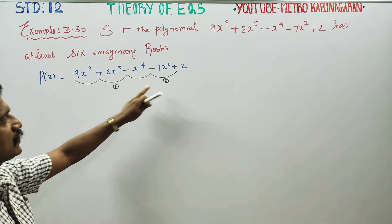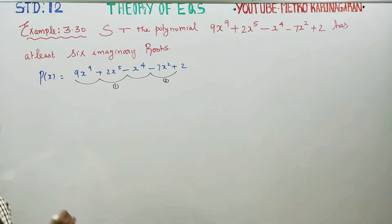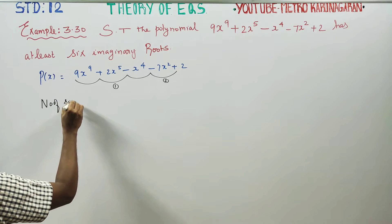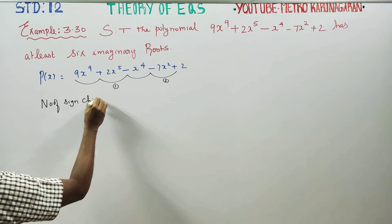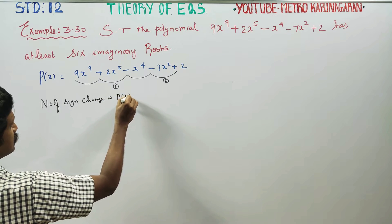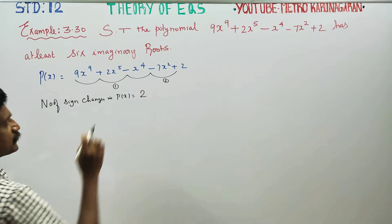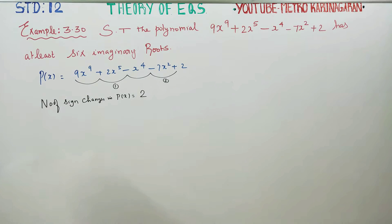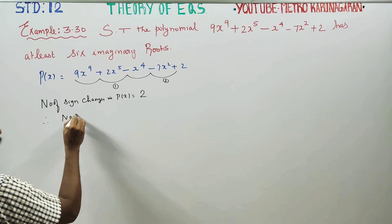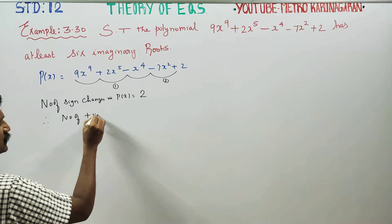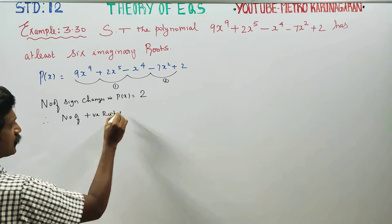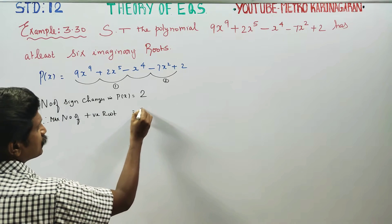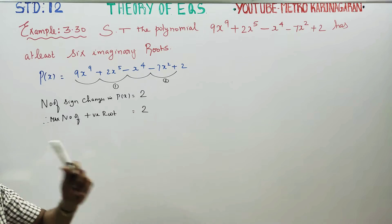The number of sign changes in p(x) is equal to 2. There are two sign changes in p(x). Therefore, the maximum number of positive roots equals 2.